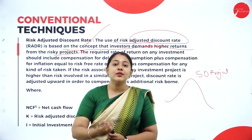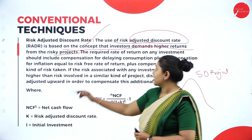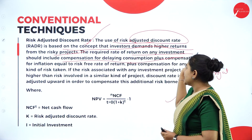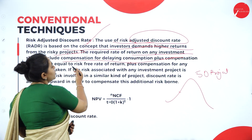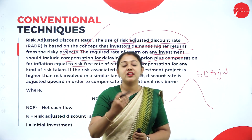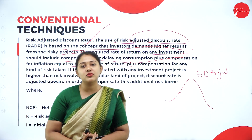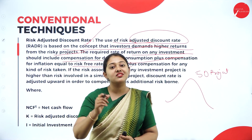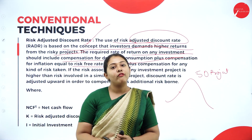The required rate of return on any investment should include compensation for delaying consumption plus inflation, which equals the risk free rate of return. For bearing the risk of delay, investors and organizations also expect a higher return — that is risk premium. This risk premium has to be adjusted using a formula to calculate the net present value.